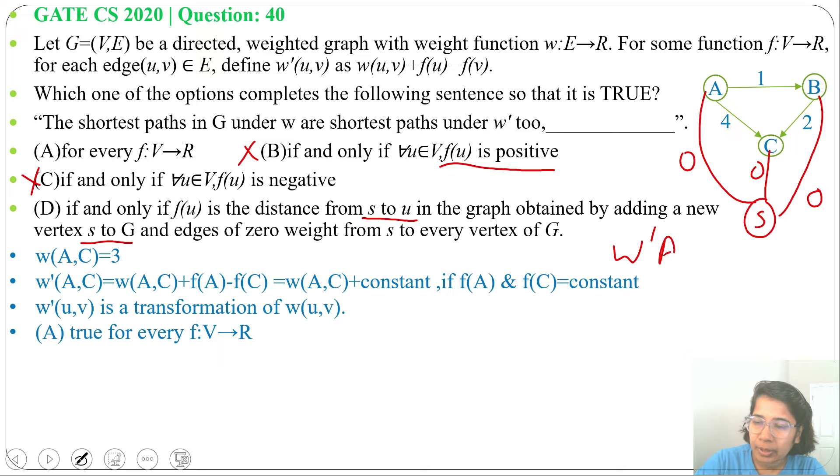Now W'(A,C) will be W(A,C) that is 3 plus F(A). F(A) is distance from S to A, so it's 0 minus F(C). F(C) is also 0. So we got 3. W'(A,C) equals to W(A,C).